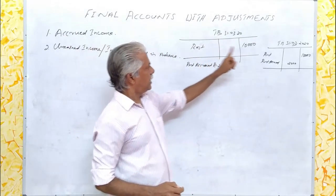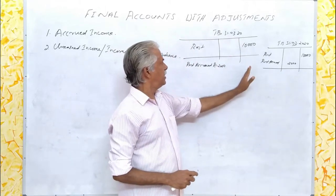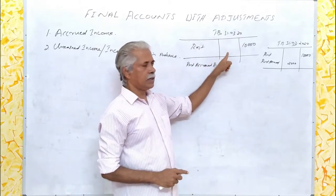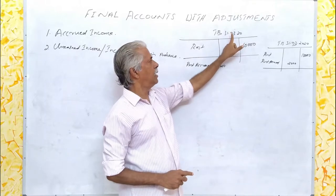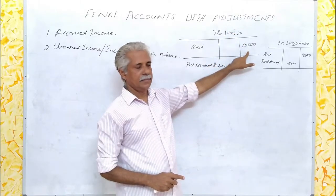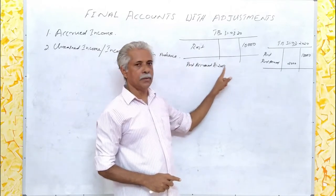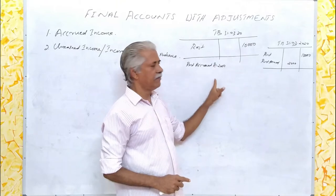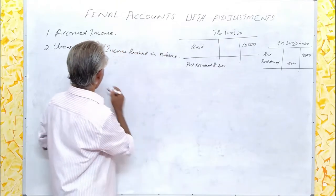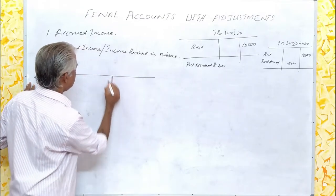Here two trial balances are given. In the first case, rent as an income in the credit column of the trial balance is given as rupees 10,000. Then in the adjustment, rent accrued rupees 2,000 is given. Let us see how it will appear in the P&L account and balance sheet.